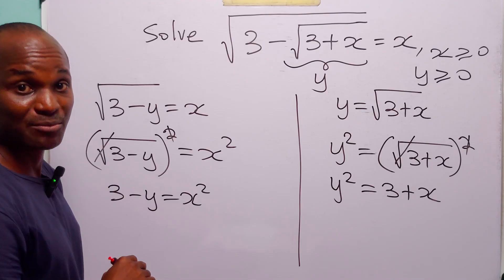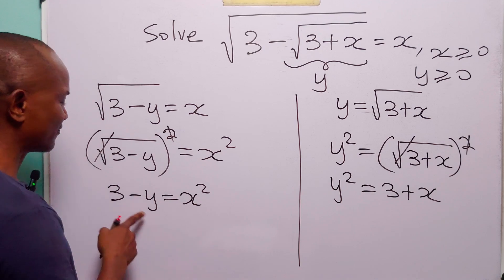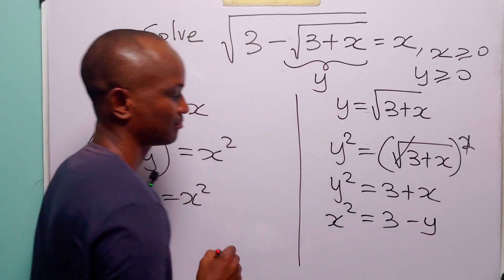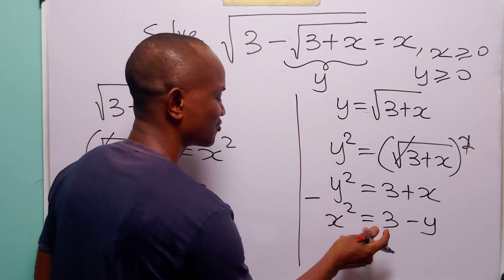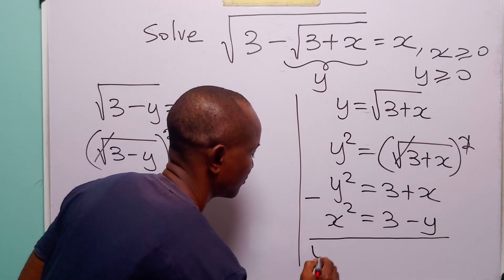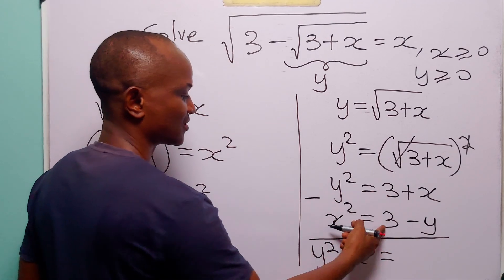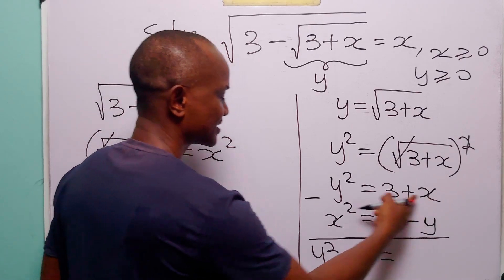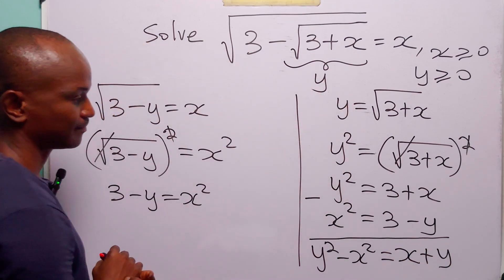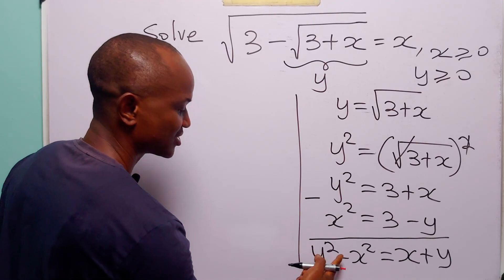Now we have a system of simultaneous equations. We have that y squared is equal to 3 plus x, and we have that x squared is equal to 3 minus y. What we are going to do is subtract the second equation from the first. When we do that, we have y squared minus x squared is equal to 0, and x minus minus y is equal to x plus y.